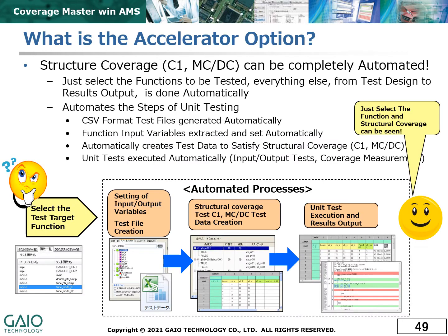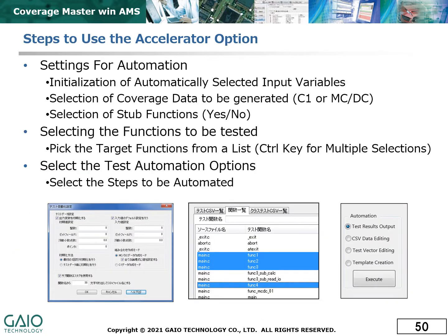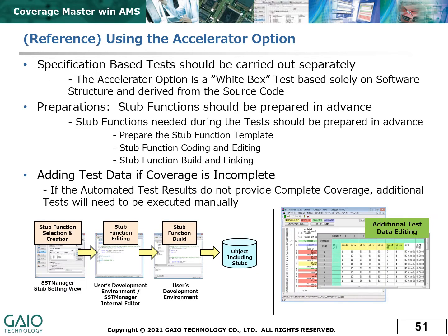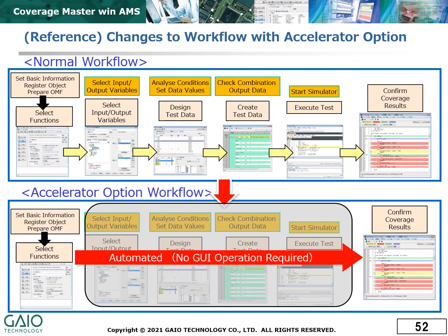The accelerator option automates all the steps of unit testing. Just initialize the settings, select the functions to be tested and set the options for the test. When using the accelerator option, white box testing is performed based on the structure of the source code, but stub functions need to be prepared in advance and if the coverage is incomplete, manual tests will need to be added. But apart from those limitations, the accelerator option allows testing to be almost fully automated.